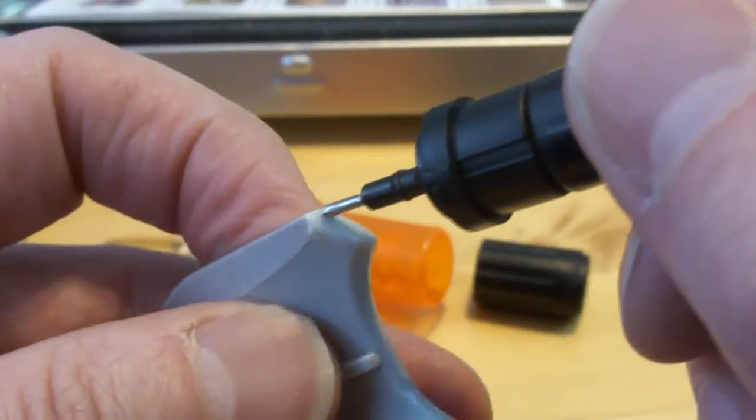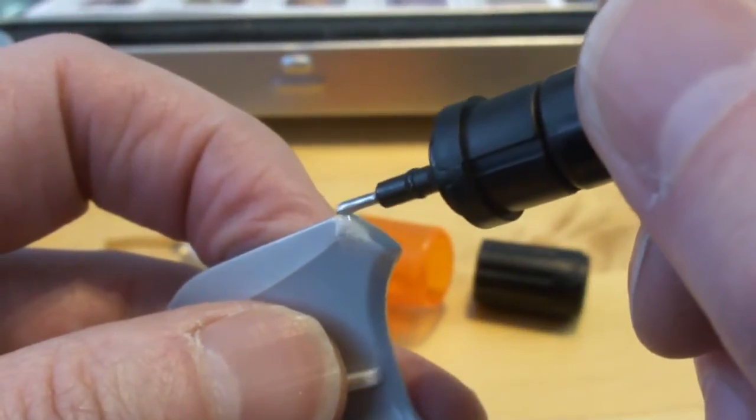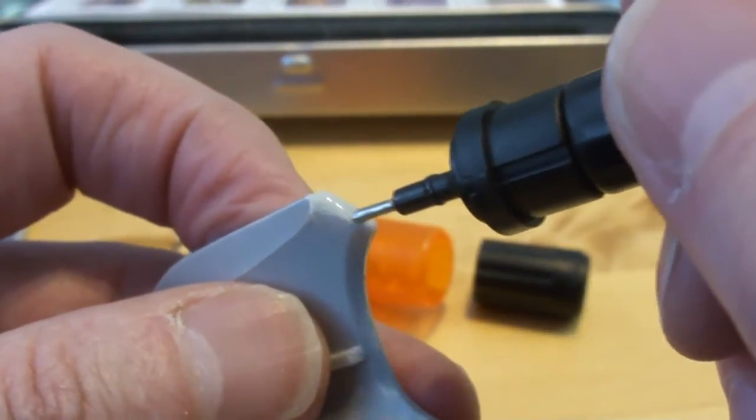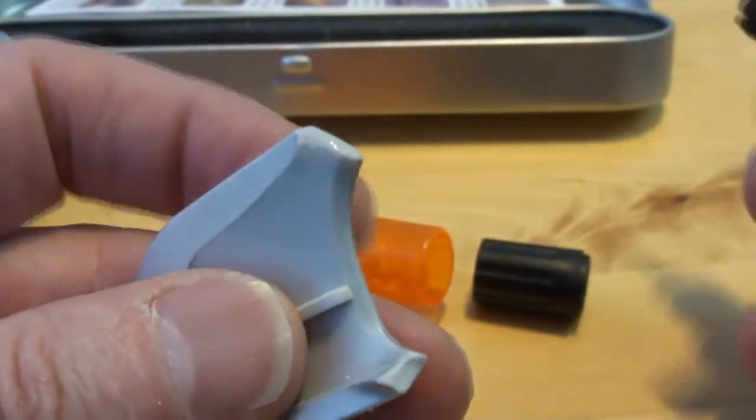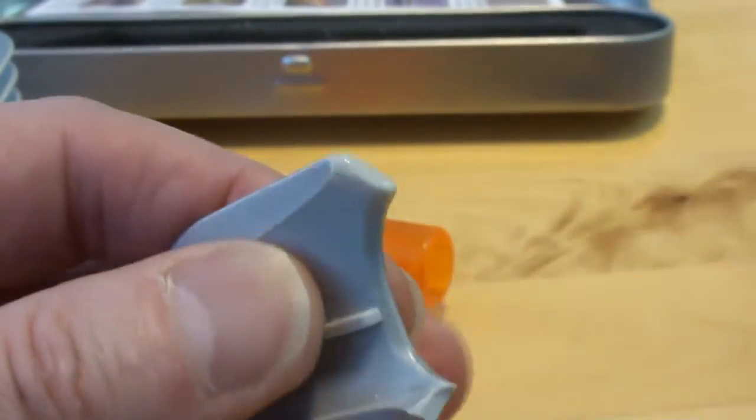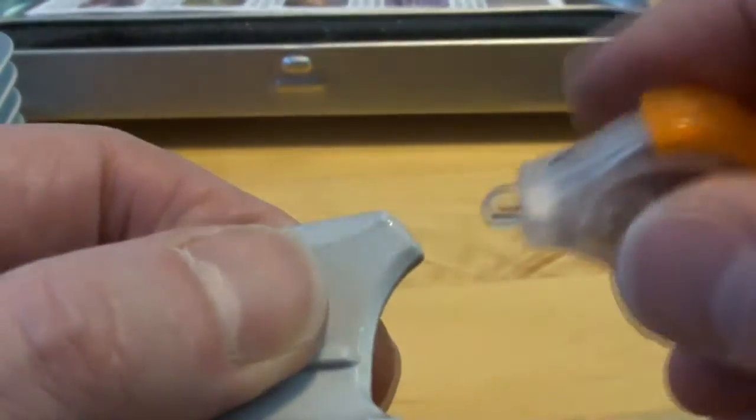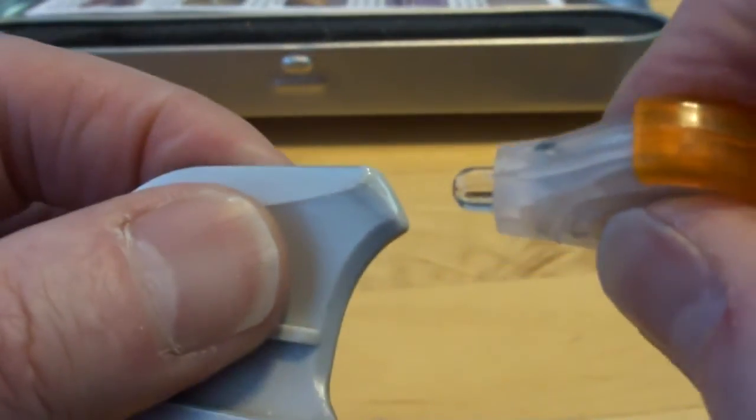That's why I started by welding a thin layer of Bondic to each surface even before trying to join the parts together. You have all the time you need to wet the surface, and it only sets when you activate it with the UV light.